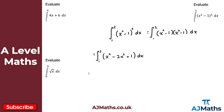Now going term by term again — add 1 to the power and divide by the new power. x to the 4 becomes x to the power of 5 divided by 5. Then minus 2x squared becomes minus 2x cubed over 3. Finally the constant 1 integrates to just x. I'm using square brackets because we're integrating with limits from 1 to 2.